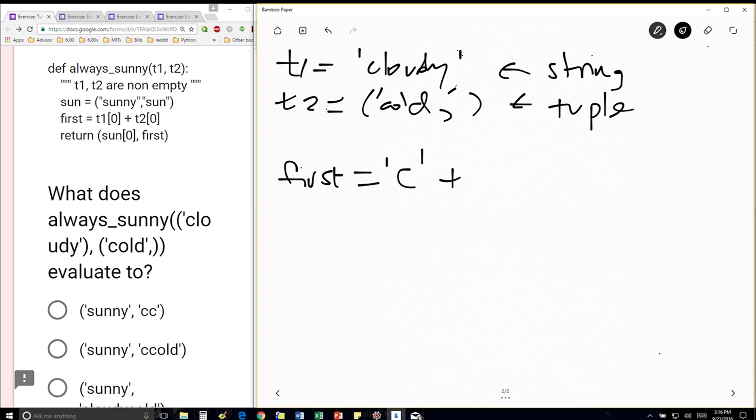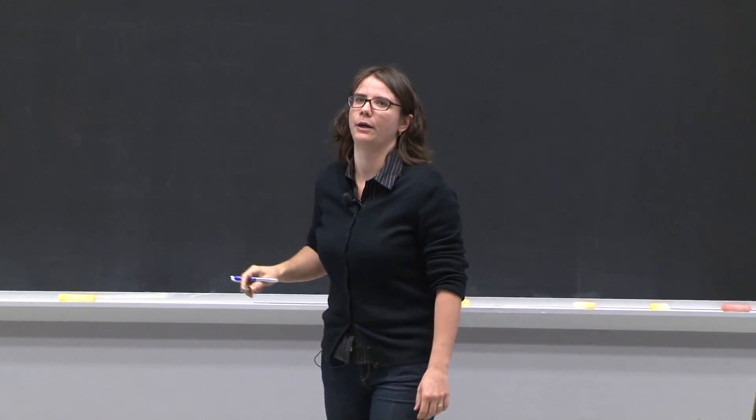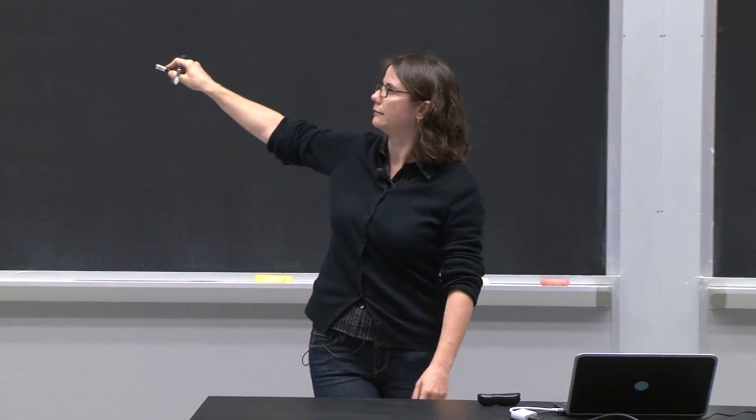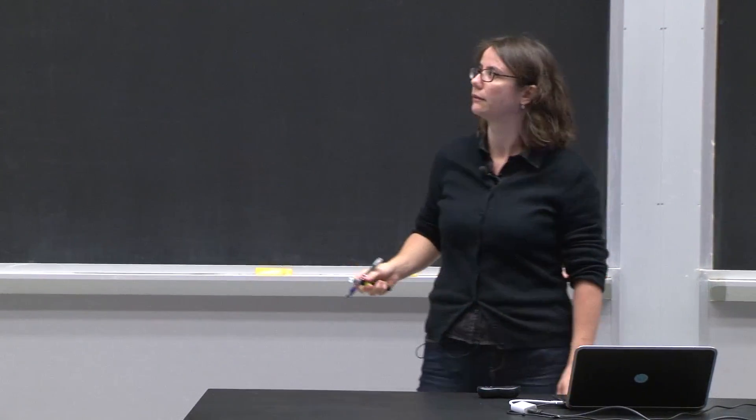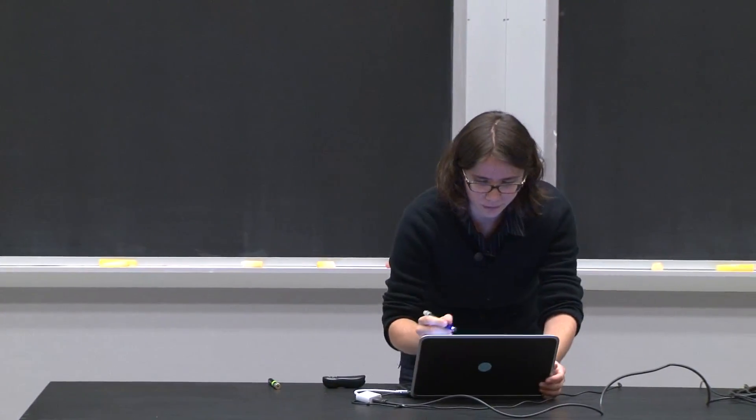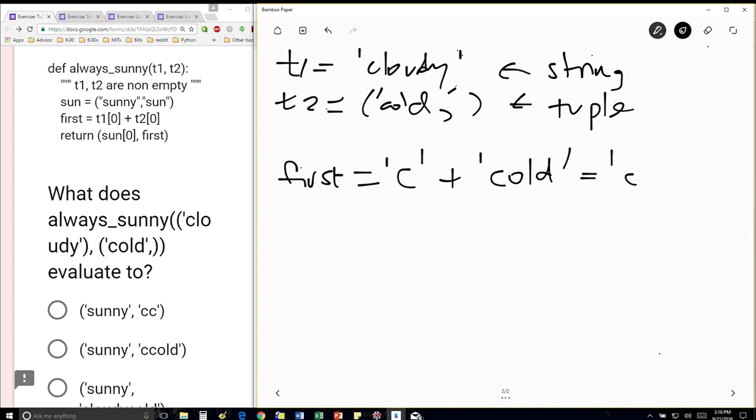And t2 at position 0 says, OK, well, this is a tuple that contains only one element, that element being at position 0. And that element is this string, cold. Right? So this is a tuple. So I'm taking everything right before the first comma, and that happens to be just the one element that's in there. OK? So this is just the string c, cold.